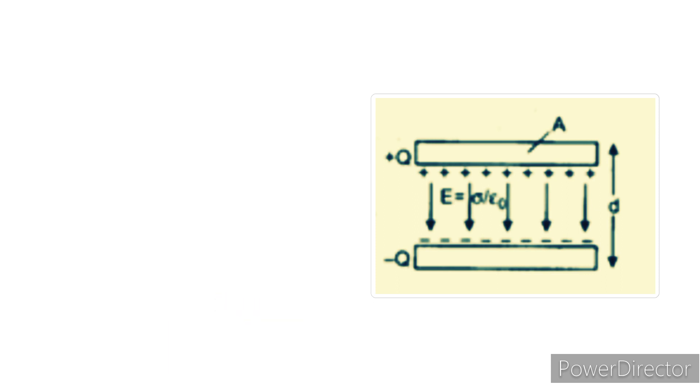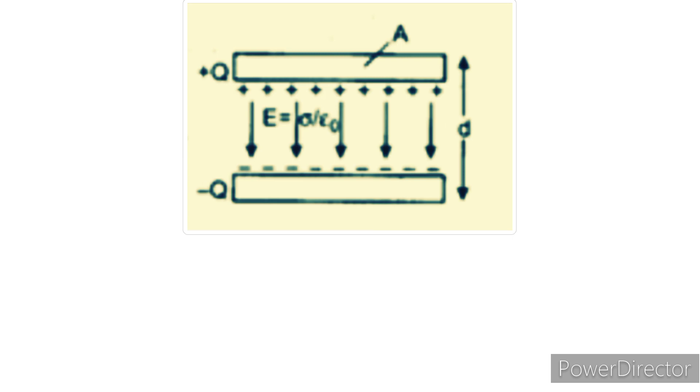A parallel plate capacitor consists of two conducting plates, having charge Q on each plate. The area of each plate is capital A and they are separated by a distance small d.